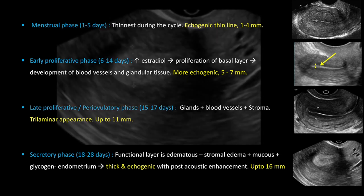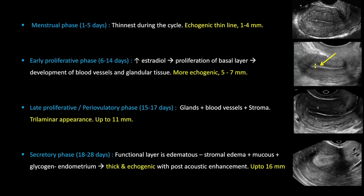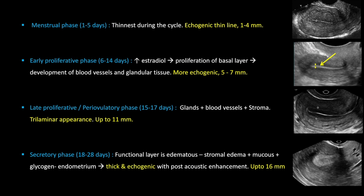The secretory phase lasts from day eighteen to twenty-eight in a normal cycle. During this phase the functional layer is most edematous, with stromal edema, mucus, and glycogen. Because of this the endometrium appears thick and echogenic with posterior acoustic enhancement, and the thickness can go up to sixteen millimeters.